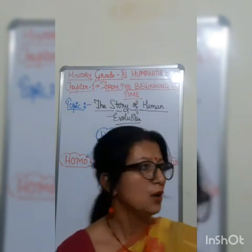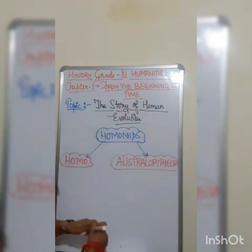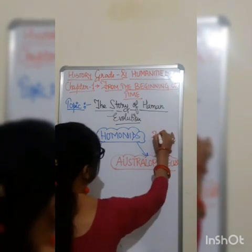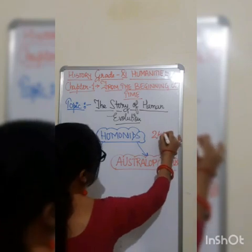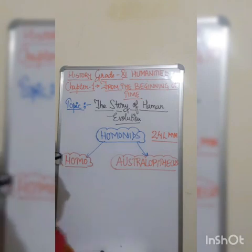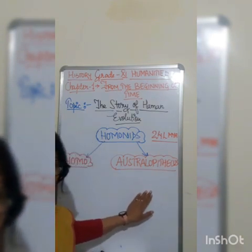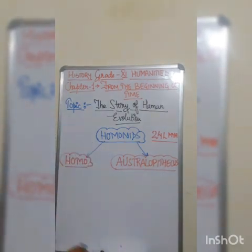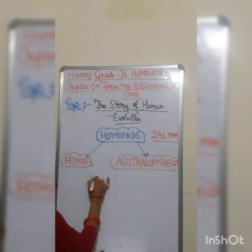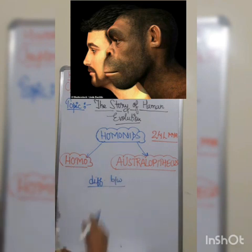Now we need to see how the second part of hominids, which came around the time period of 24 lakh years ago, developed. These hominoids are further divided into homos and australopithecus. Let us see the differences between homo and australopithecus.